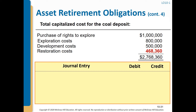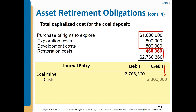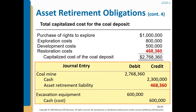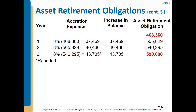The journal entry to record this transaction: debit Coal Mine $2,768,360; credit Cash $2,300,000 and credit Asset Retirement Liability $468,360 for the restoration cost. We also record the purchase of excavation equipment: debit Equipment $600,000 and credit Cash $600,000. After every year, we need to calculate the interest, which is also called the accretion expense.